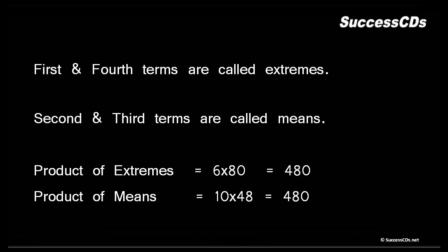Now always remember: product of extremes here is 6 × 80, that comes out to be 480. Product of means is equal to 10 × 48, that is 480. Both the products are equal - that is, product of extremes is equal to product of means.